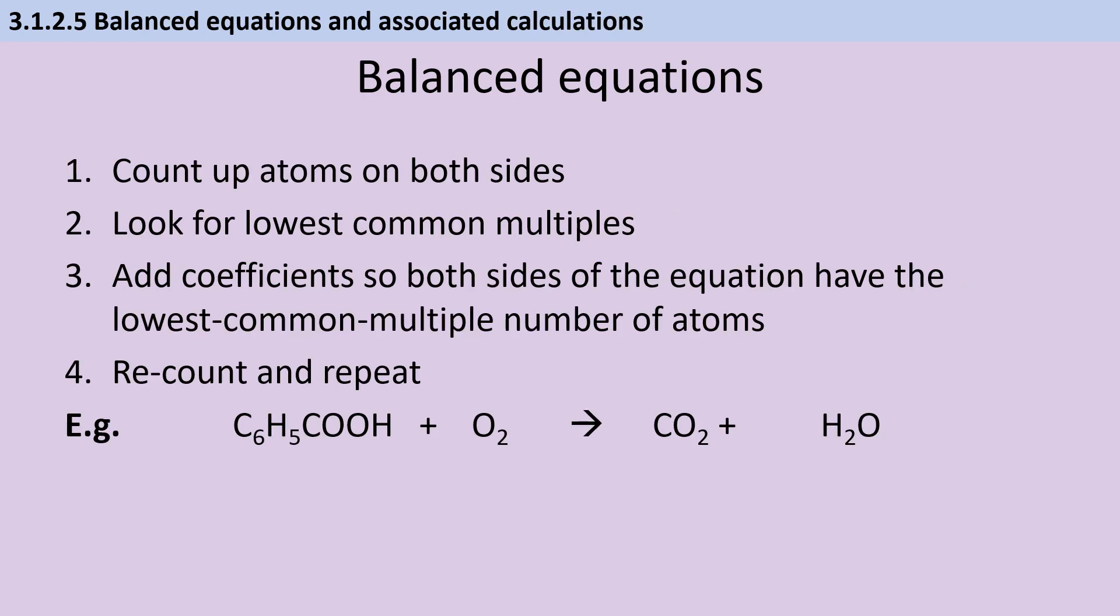To balance equations, start off by writing down the number of atoms of each element on each side. Then look for an element that's not balanced and think about what the lowest common multiple would be. Here I'm going to start with carbon, and the lowest common multiple of 1 and 7 is 7. So I need to multiply by adding coefficients, and here I'm going to add a 7 in front of the carbon dioxide. Next I'm going to think about the hydrogen, and here I'm trying to balance 6 versus 2. So the lowest common multiple is 6, and therefore I need to add a coefficient of 3 on the right-hand side. Then I'm going to think about oxygen, and I've got 17 in total on the right-hand side. So I need 17 on the left-hand side, but I also need to take account of the two that are in the carboxylic acid. Once I remove those, I'm left with 15, and therefore I need to add 7.5 as a coefficient for the oxygen.